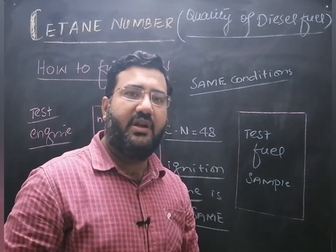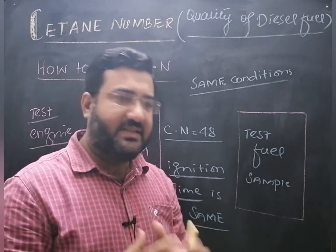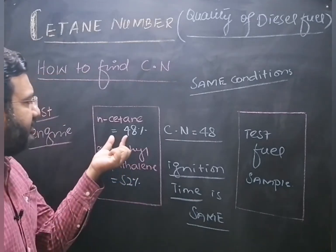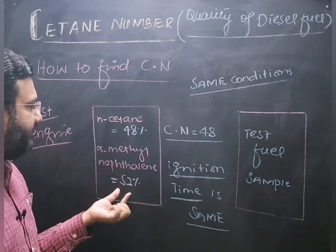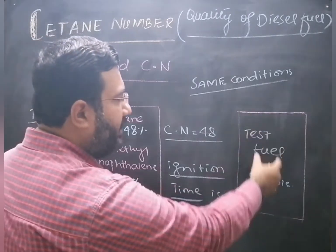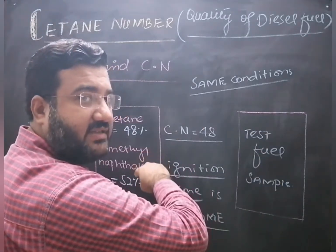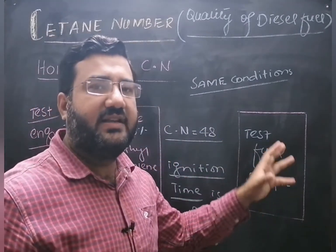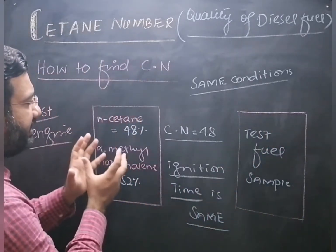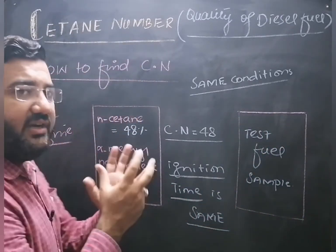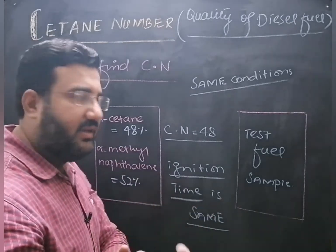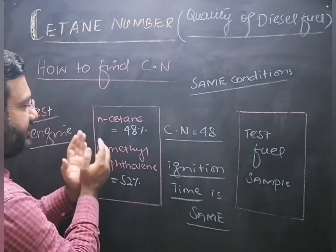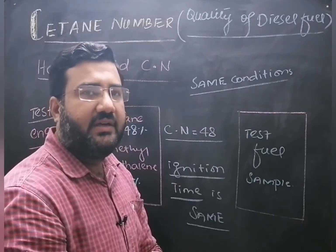If the cetane number of the reference fuel is 48, then the cetane number of the sample or test fuel will also be 48. Basically, the ignition delay — meaning the time required for ignition — if that of a reference fuel and test fuel matches, then the cetane number of the reference fuel is also the cetane number of the test fuel.